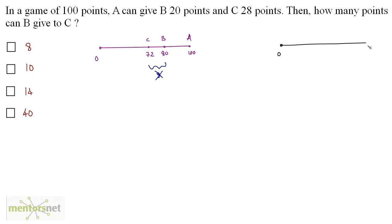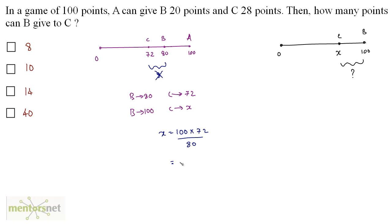So we have a new situation: 0 to 100. When B reaches 100, we calculate how many points C has. When B has 80 points, C has 72 points. When B has 100 points, C has x = 100 times 72 divided by 80, which equals 90 points. If B has 100 points and C has 90 points, B can give C 100 minus 90, which is 10 points. Option B is the correct answer.